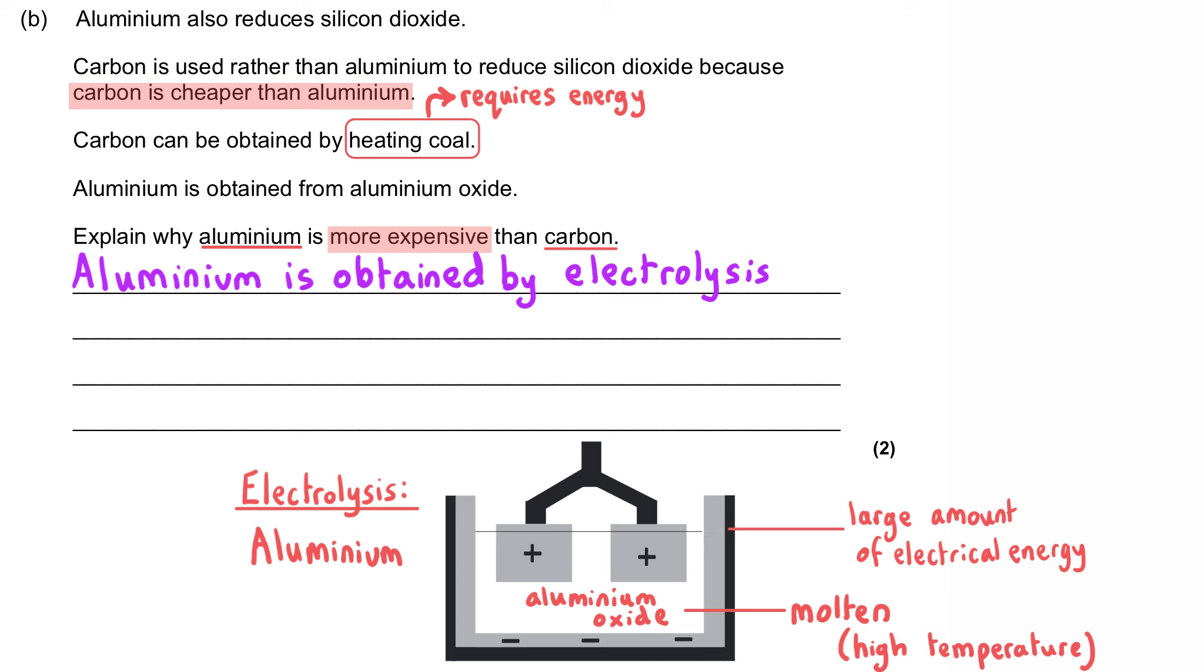But we've been asked to explain why aluminium is more expensive than carbon. And so the presence of that word 'more' in our question means we need to use comparative language. Not just say that it is expensive, but say that it is more expensive. And the reason why it is more expensive is that more energy is needed. So not just a lot of energy or a great deal of energy, we need to be comparative.